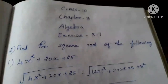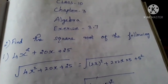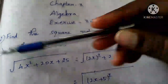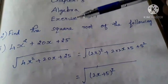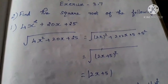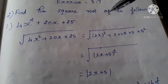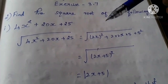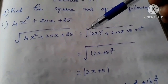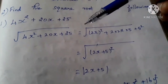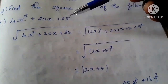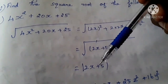Good morning students. Today we are going to see Class 10 Chapter 3 Algebra Exercise 3.7 Question Number 2. Question number 1 we already saw — finding the square root by the factorization method. Last class we saw the square root by factorization method. This is the second model. Factorization method means first we have to factorize the polynomials and then find the square root.